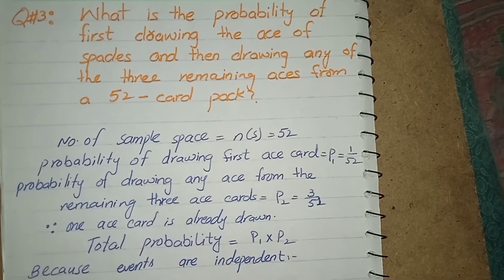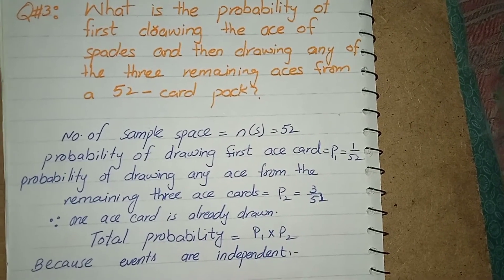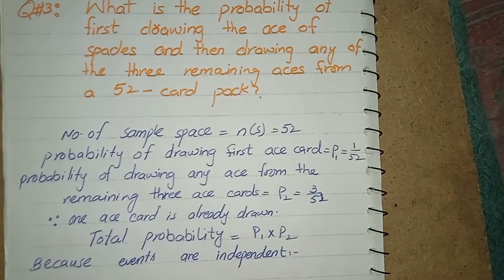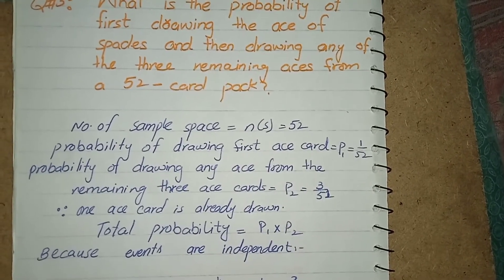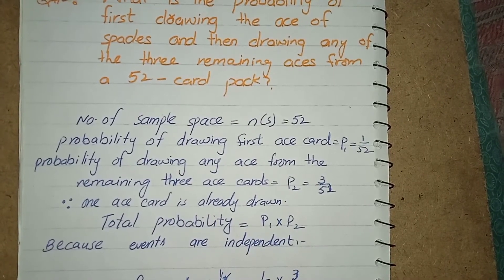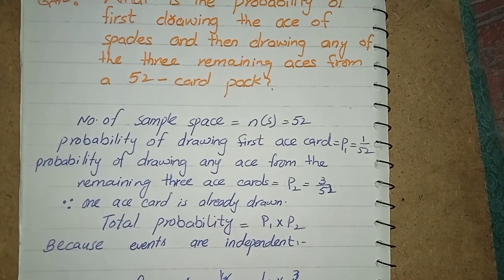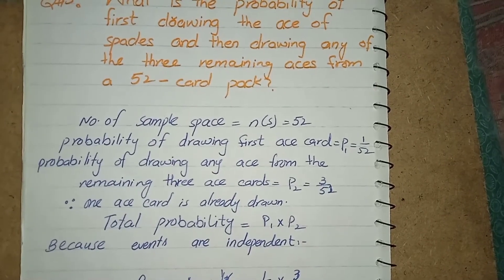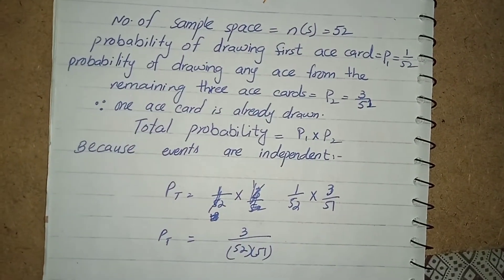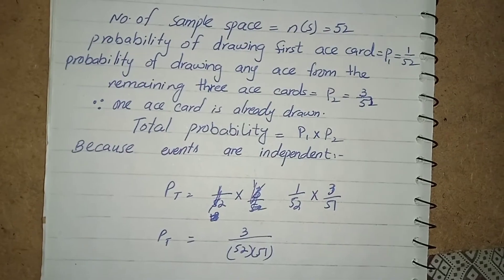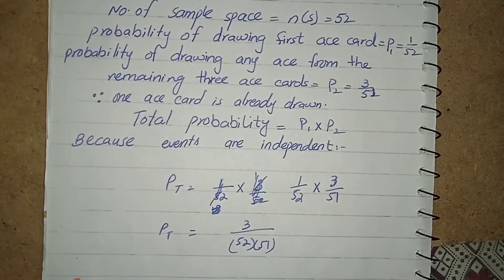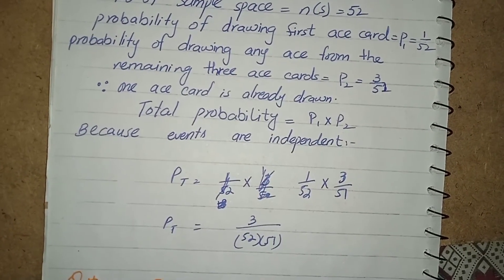And after that when you draw any ace card from the remaining 3 then the probability for those three would be 3 over 51. Now why here is 51 rather than 52? Because we already draw an ace from the set of 52 cards. Now we have to draw three cards from the remaining 51 cards. Total probability would be P1 multiplied by P2. Now why I am multiplying them? Because both the events are independent but are not mutually exclusive.